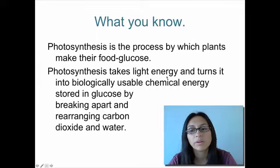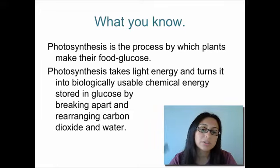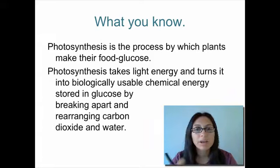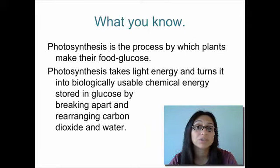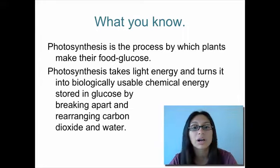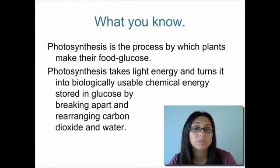Photosynthesis is a process by which plants make their food — specifically carbohydrates, and a particular one: glucose. Plants take light energy and trap it in glucose, converting light energy into chemical energy. Glucose is chemical energy that stores energy for living things. We talked about this with autotrophs and heterotrophs — autotrophs can make their own food, but heterotrophs can't, so they have to eat other living things to get their energy, and what they're looking for is the glucose.